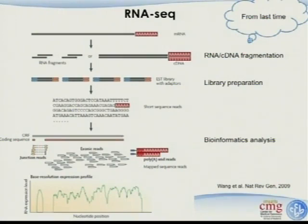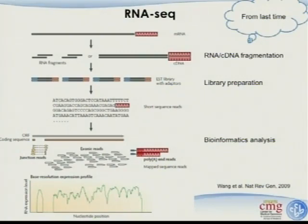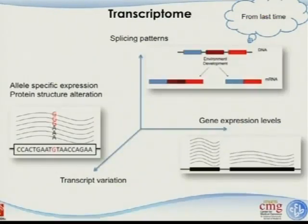At a certain point, you have to convert from RNA to DNA. Although some technologies are trying to work on direct RNA sequencing, they're not there yet. After fragmentation, you do the library preparation — you can see the linkers — then sequencing to get ACGTs. From there, you align the reads back to the genome or transcriptome. There are exonic reads, junction reads, and polyadenylation reads, and you can do further analysis from there.